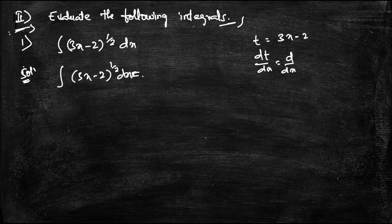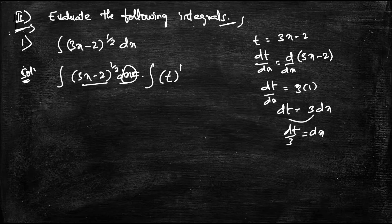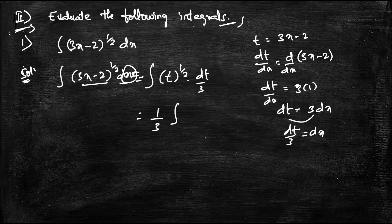Differentiating: d/dx of (3x minus 2) gives 3, so dt/dx equals 3, meaning dt equals 3 dx, and therefore dx equals dt/3. Substituting, the integral becomes t to the power of 1/2, and I will keep 1/3 outside: (1/3) integral of t^(1/2) dt.